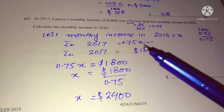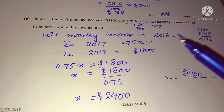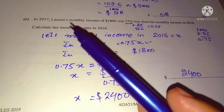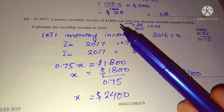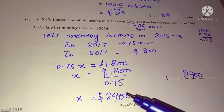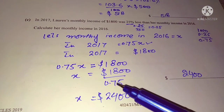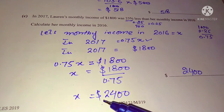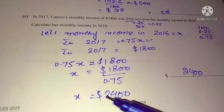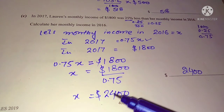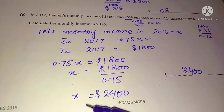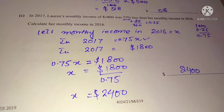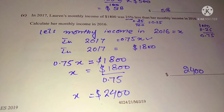So in 2017, the income was 0.75x, where x is the 2016 income. The 2017 income is given as $1800, so 0.75x = 1800. Divide both sides by 0.75: x = 1800 ÷ 0.75 = $2400. Her monthly income in 2016 was $2400. I hope that is clear to you.